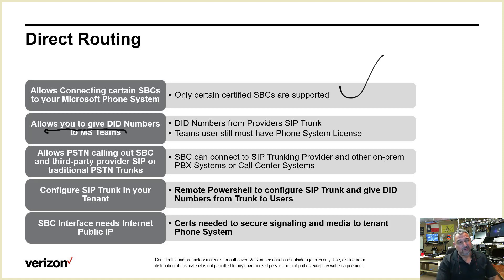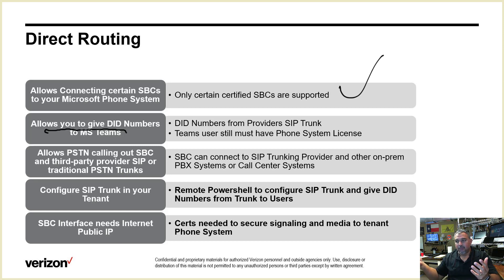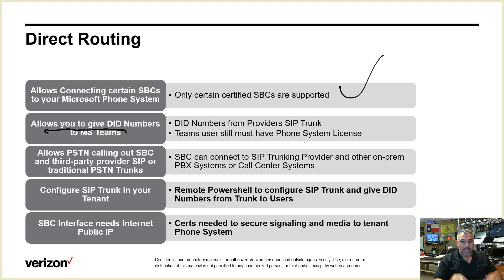Direct Routing allows you to give DID numbers to MS Teams without needing a Calling Plan. Instead of Microsoft's integrated service providers, you're bringing a trunk in from an SBC, and numbers come from another service provider. You are responsible for getting those directory numbers and applying them to users — they won't automatically appear in the Microsoft Teams portal. There's manual work involved: you assign numbers from a spreadsheet and configure them onto users.